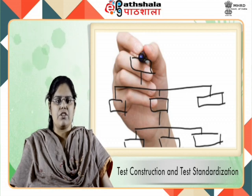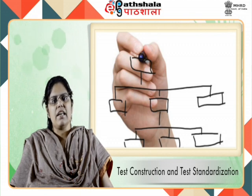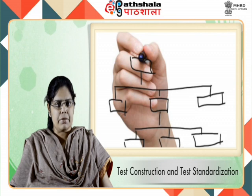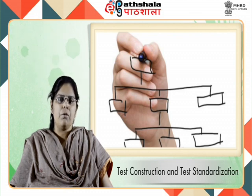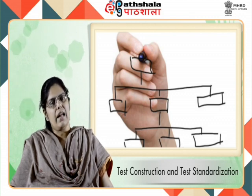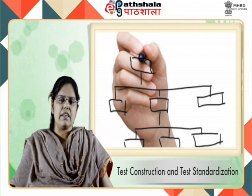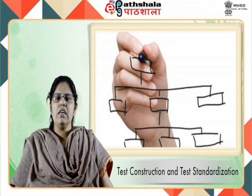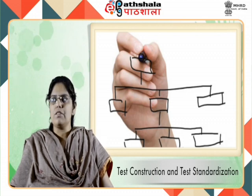Therefore, prior to test construction and its standardization, some general rules must be considered. The construction of a test and its standardization are two different but related concepts. In test construction, after item analysis, the items are finally chosen. Whereas in standardization, the chosen items are administered to large groups and then standard norms are prepared according to the results. In other words, test construction is one of the steps in standardization. A test can be constructed and may or may not be standardized, but for standardization a test must be constructed.